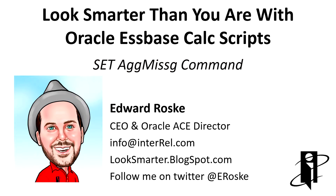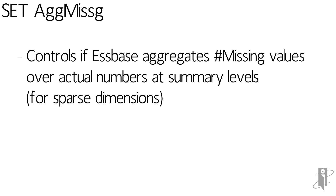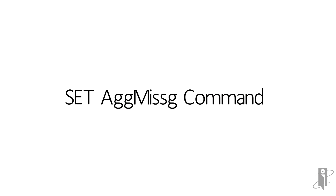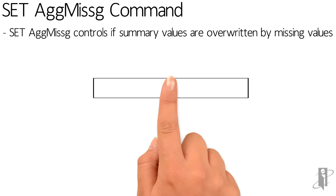Welcome to the setAggMissing command. SetAggMissing determines if Essbase inside of the calc script aggregates missing values at a lower level over numbers that were actually stored at a summary level. This is used on sparse dimensions. SetAggMissing is a database setting, but you're basically overwriting it inside of the calc script.